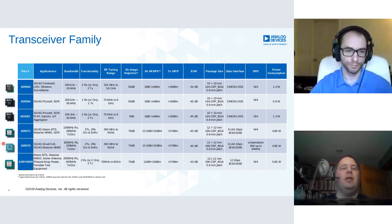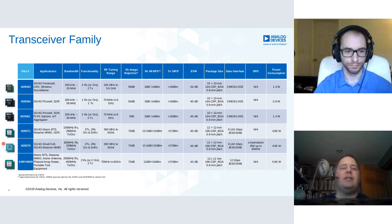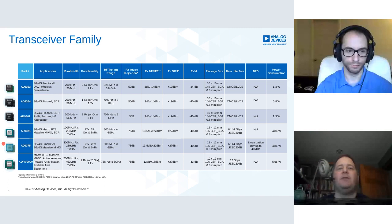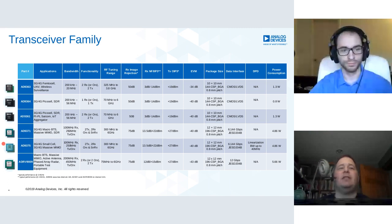So you pay for bandwidth in terms of power. ORX is a separate observer path, so you'll actually have separate ADCs for observer channels as well as sniffer channels.